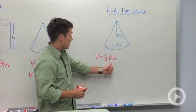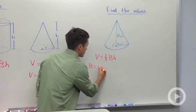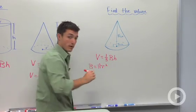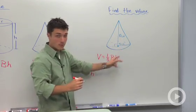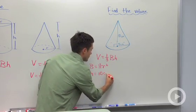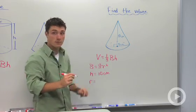Now we need to identify our known variables. We know that our base area is equal to pi r squared. We know that our height is equal to ten centimeters. And we know that our radius is equal to five centimeters.